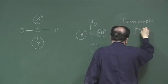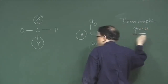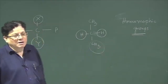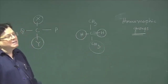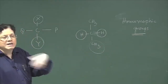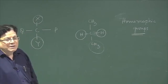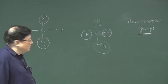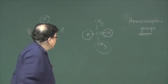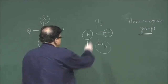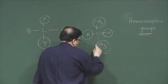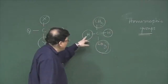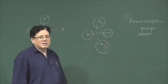Homomorphic groups means groups which in isolation look the same — they have the same constitution. Then they are called homomorphic groups or homomorphic ligands. Like the two methyls, they are homomorphic ligands. Like the two hydrogens, they are also homomorphic ligands.